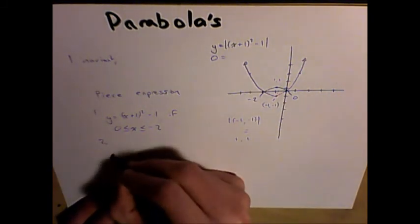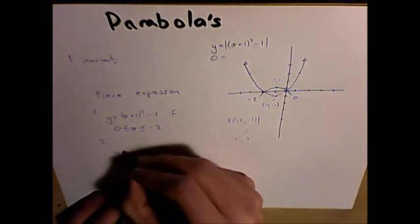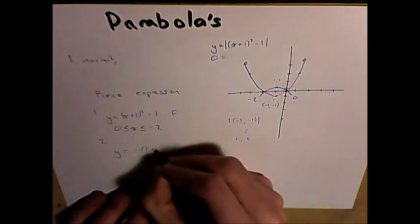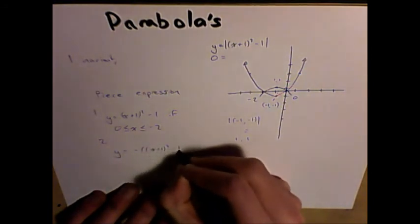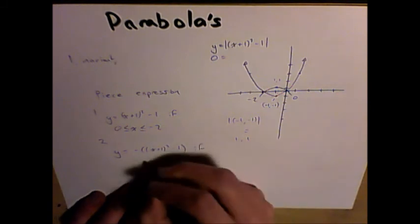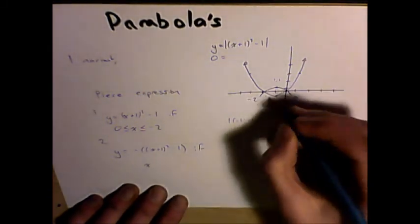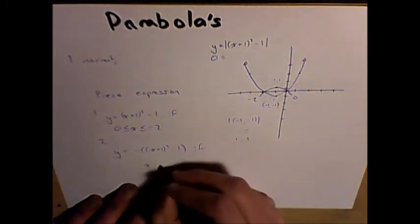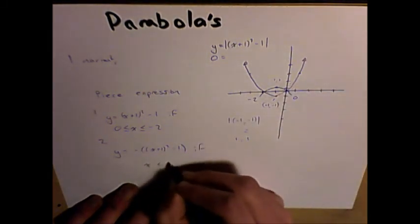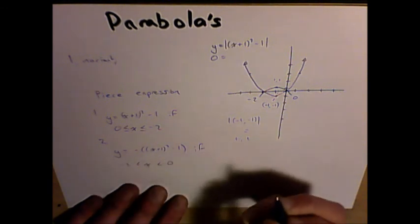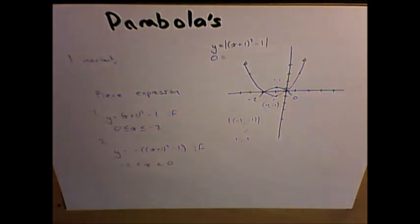The second part is where we have the negative values of x. So y equals negative x plus 1 squared minus 1 if—and this is where we set the domain for our negative values—if x is less than 0 or greater than negative 2. It's as easy as that.